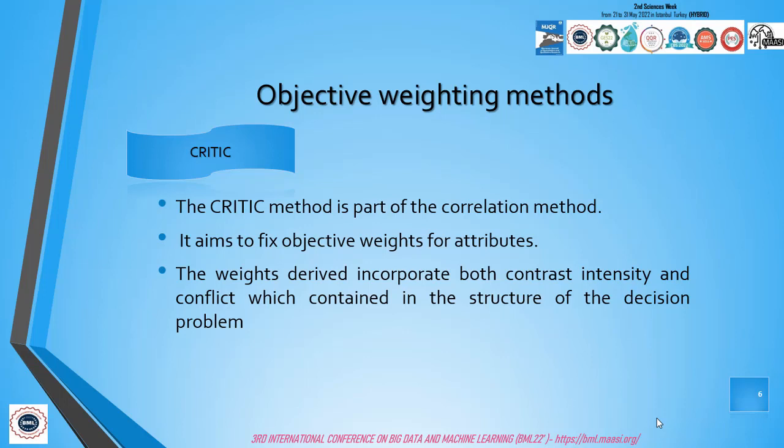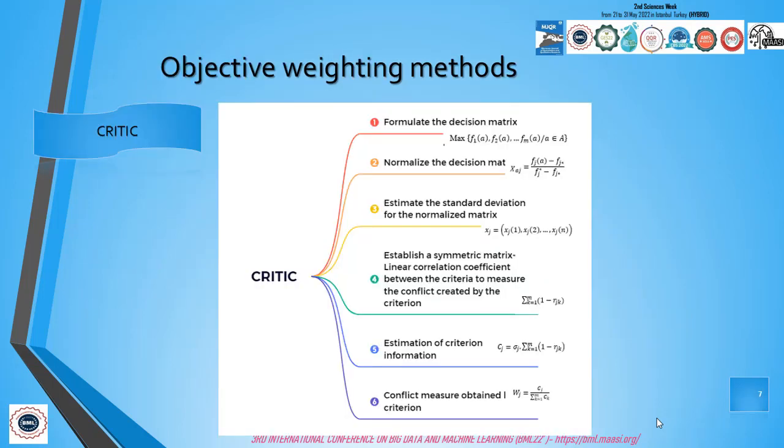We pass to present the first objective weighting method, CRITIC. The CRITIC method is part of the correlation method. It was proposed by Diakulaki in 1995. It's aimed to fix objective weights for attributes and depends on analytical testing of the decision matrix. The weights derived incorporate both contrast intensity and conflict contained in the structure of the decision problem.